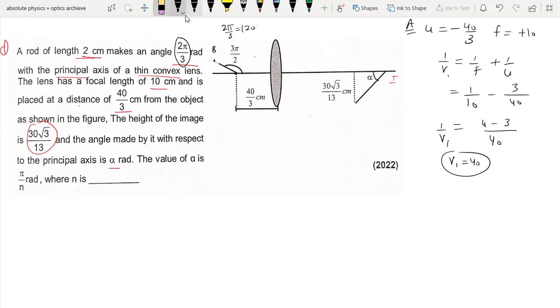So this angle is 60 degrees, and the length is 2 cm. This horizontal distance is equal to 2 cos 60.